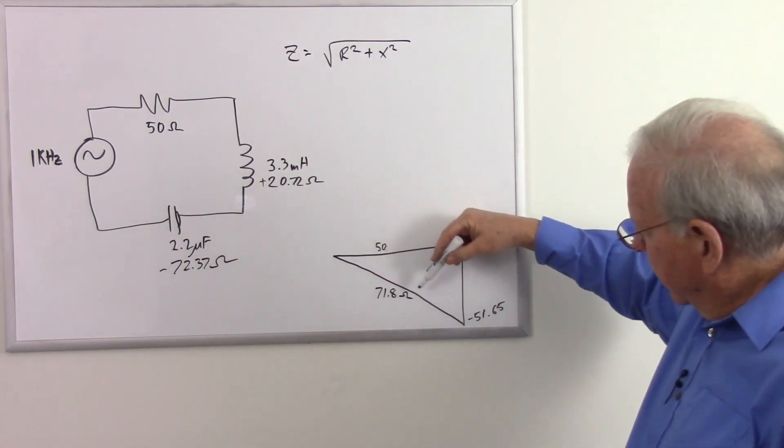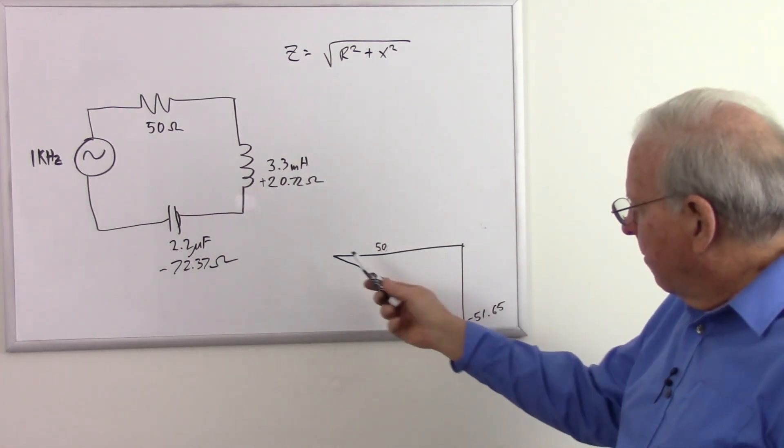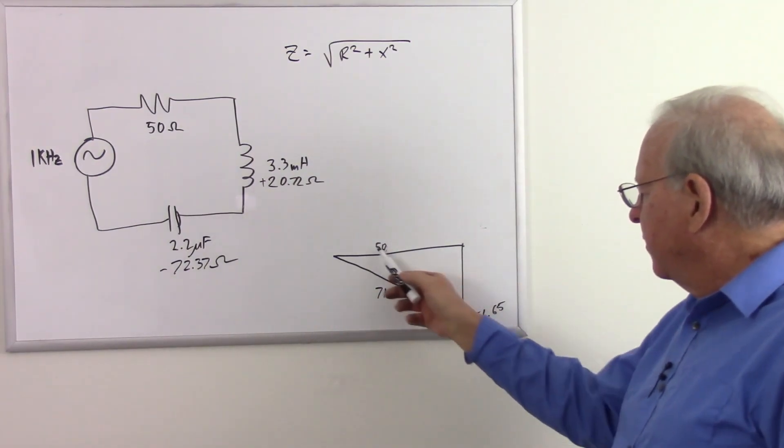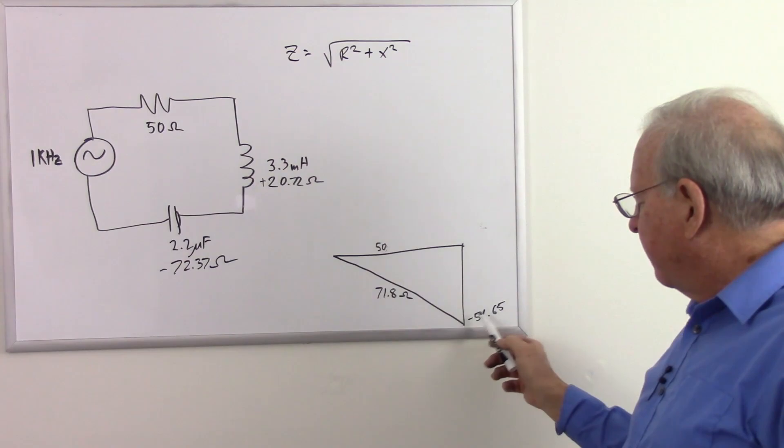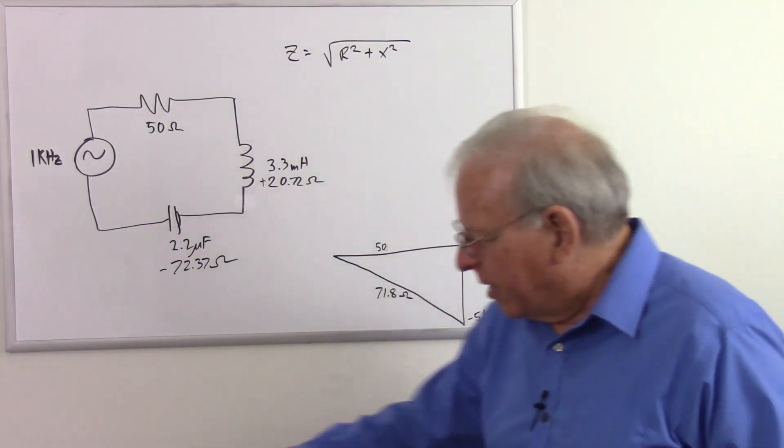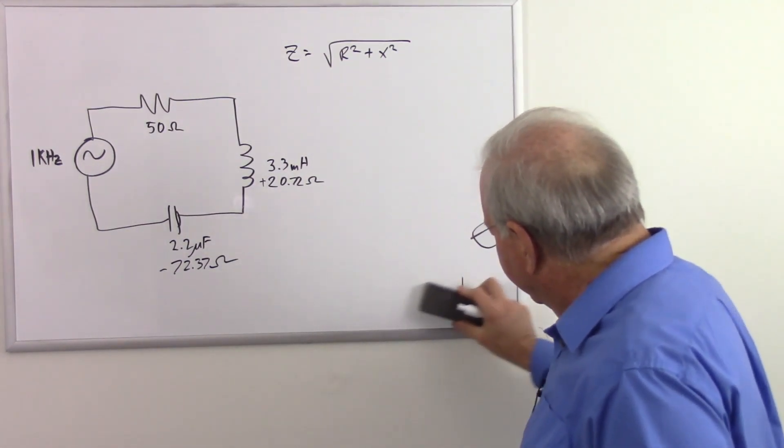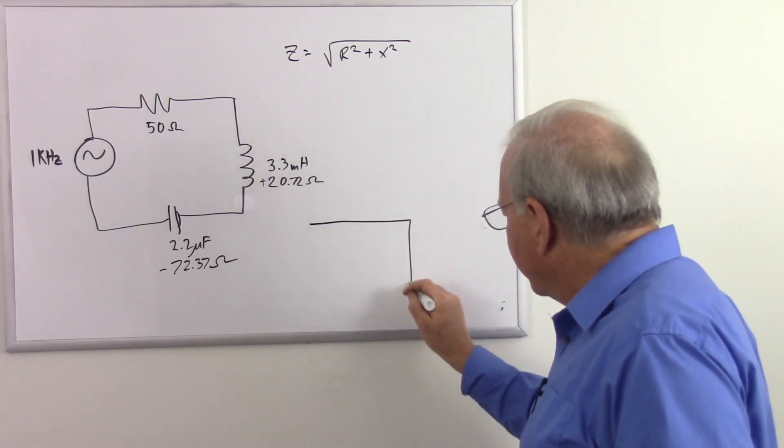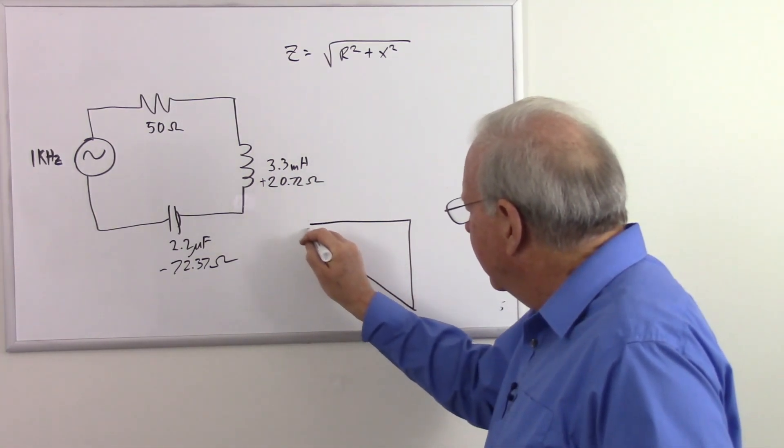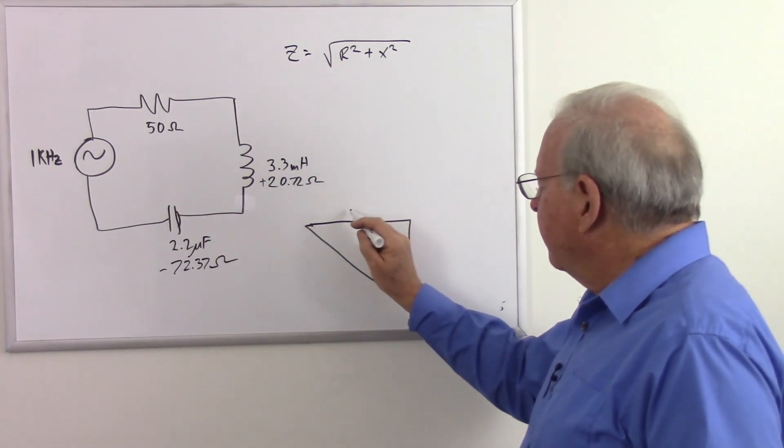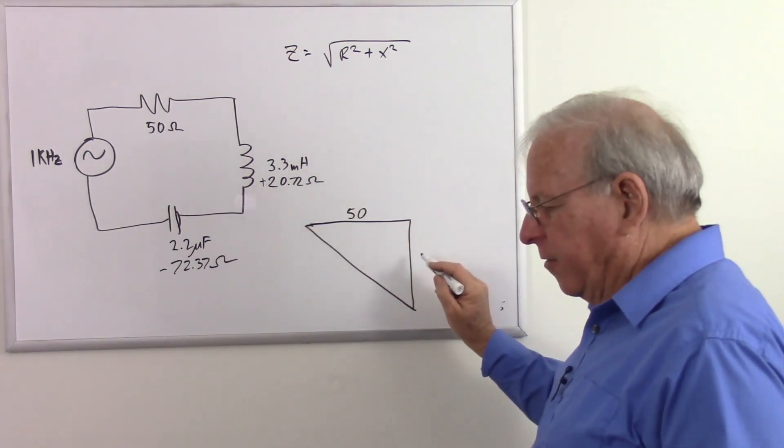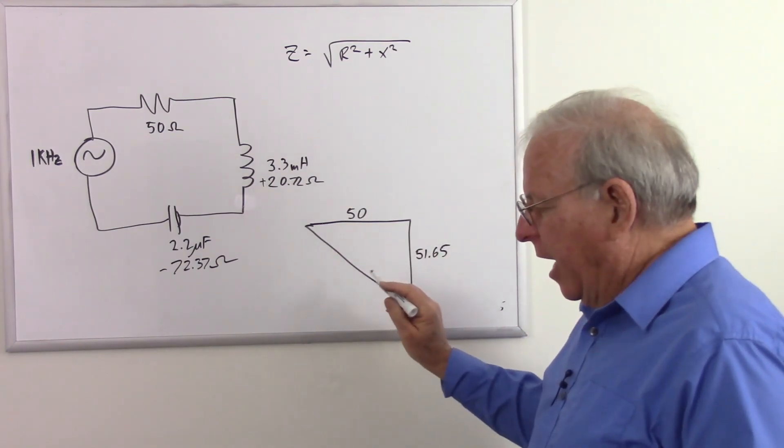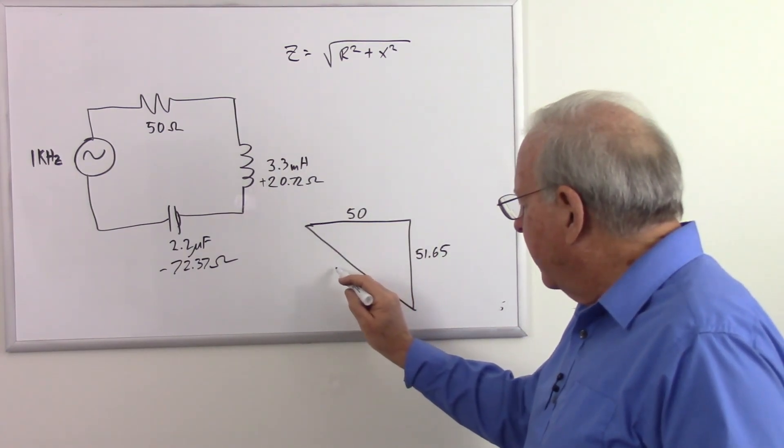So the length of that hypotenuse, that should be almost a 45 degree angle, shouldn't it? 50 ohms and 51.65 ohms, that should be a 45 degree angle. Just because we can, let's redraw that. That should be almost a nice, pretty 45 degree angle. So we have 50 ohms and 51.65 ohms and 71.8 ohms.